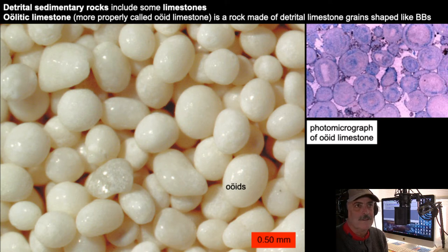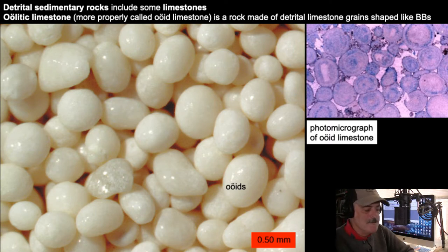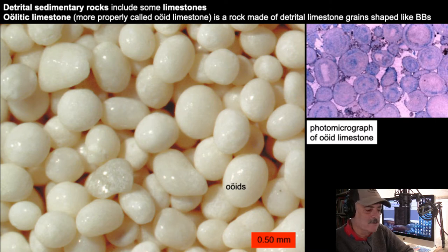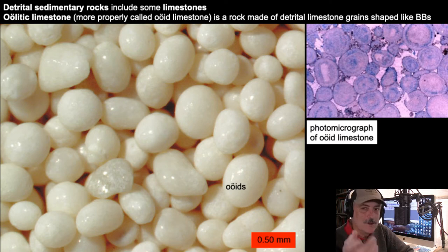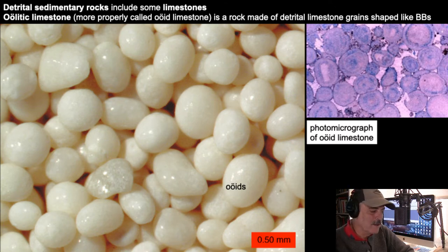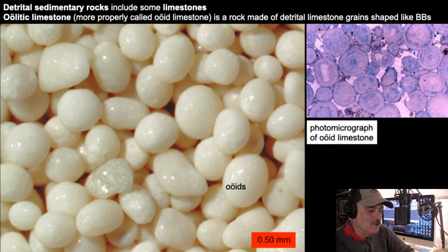The ooids on the left-hand side have to be less than two millimeters — essentially carbonate sands — that accumulate one layer at a time as they roll around on the ocean floor. The term 'oolite' actually refers to a rock body, so the Short Creek Oolite is made out of ooids. These are ooids; oolite is the rock body.